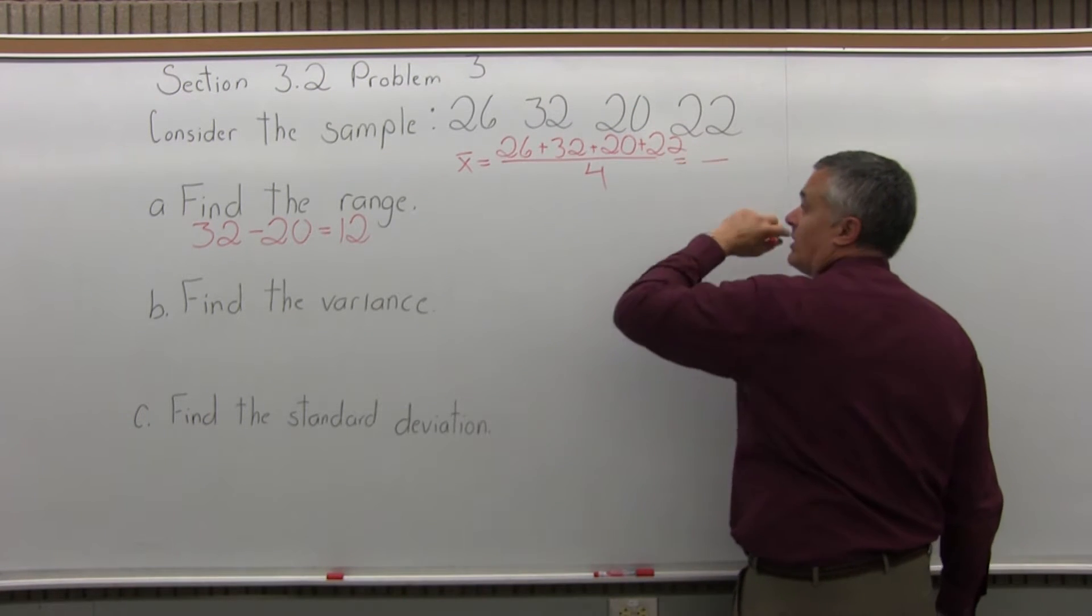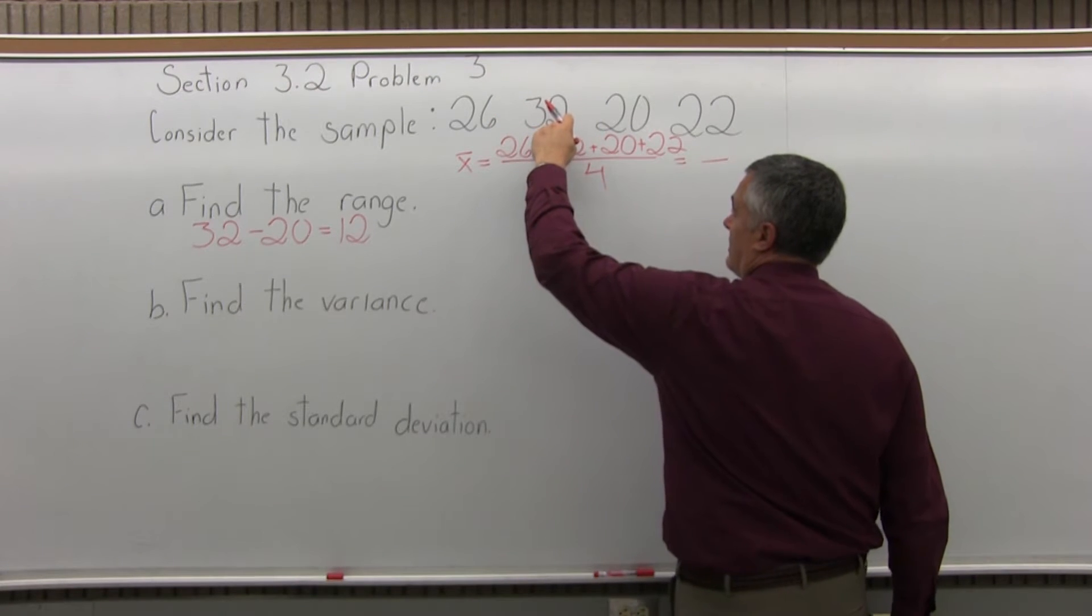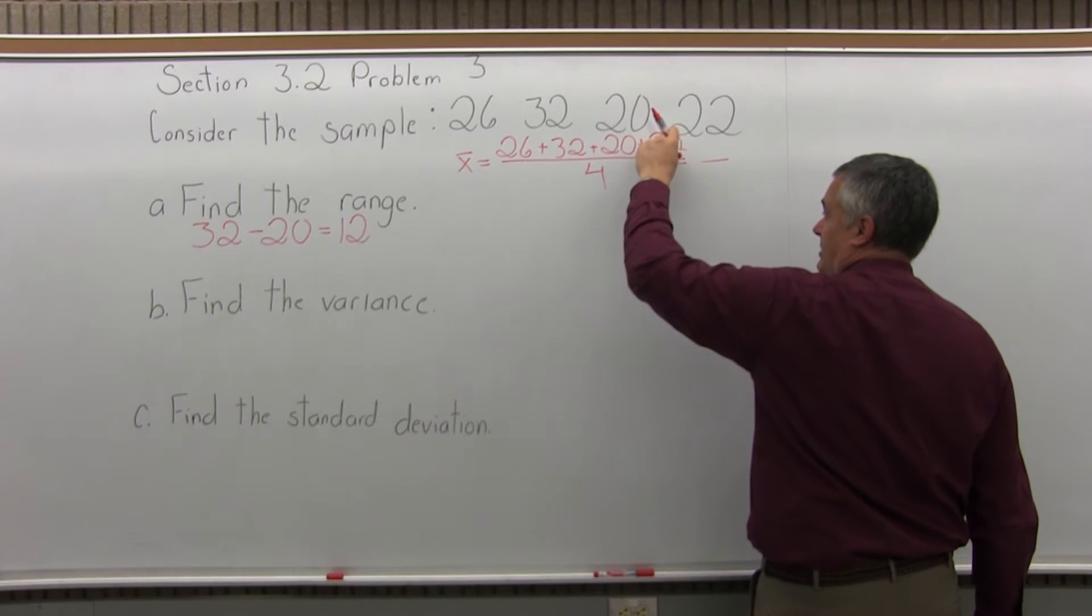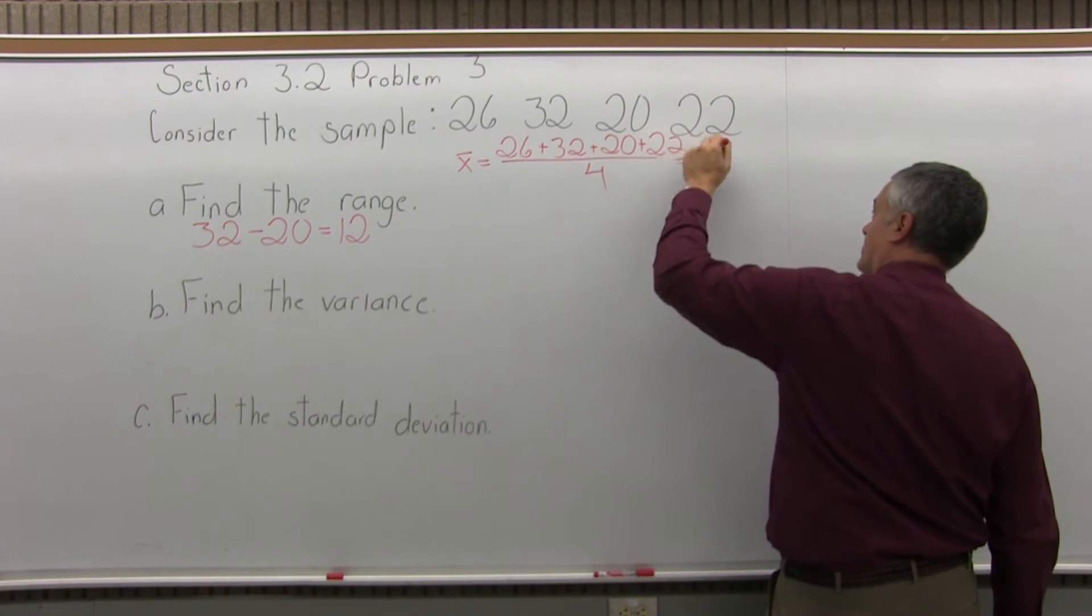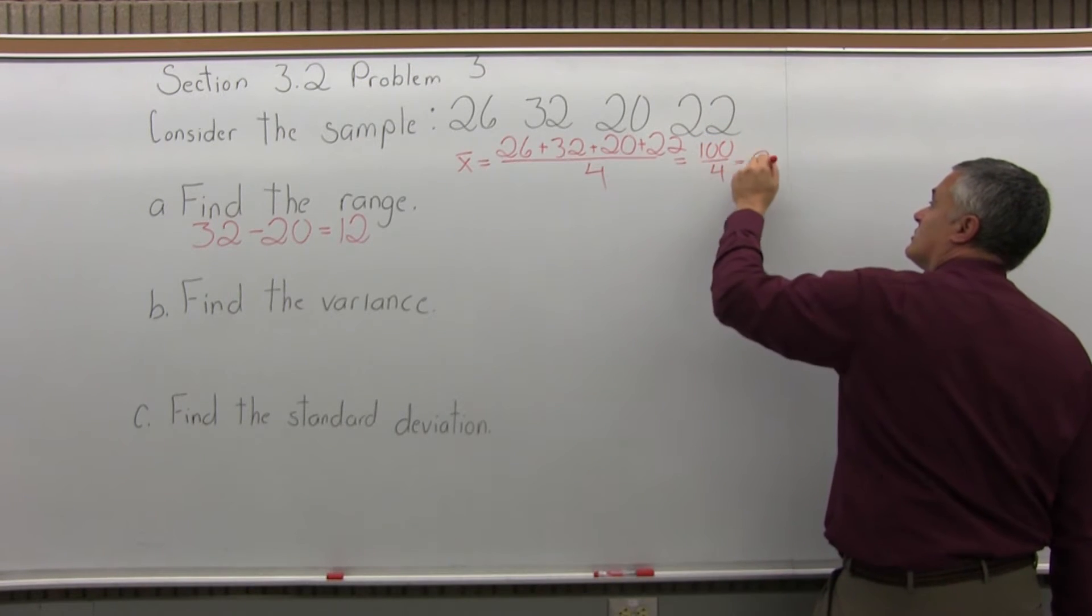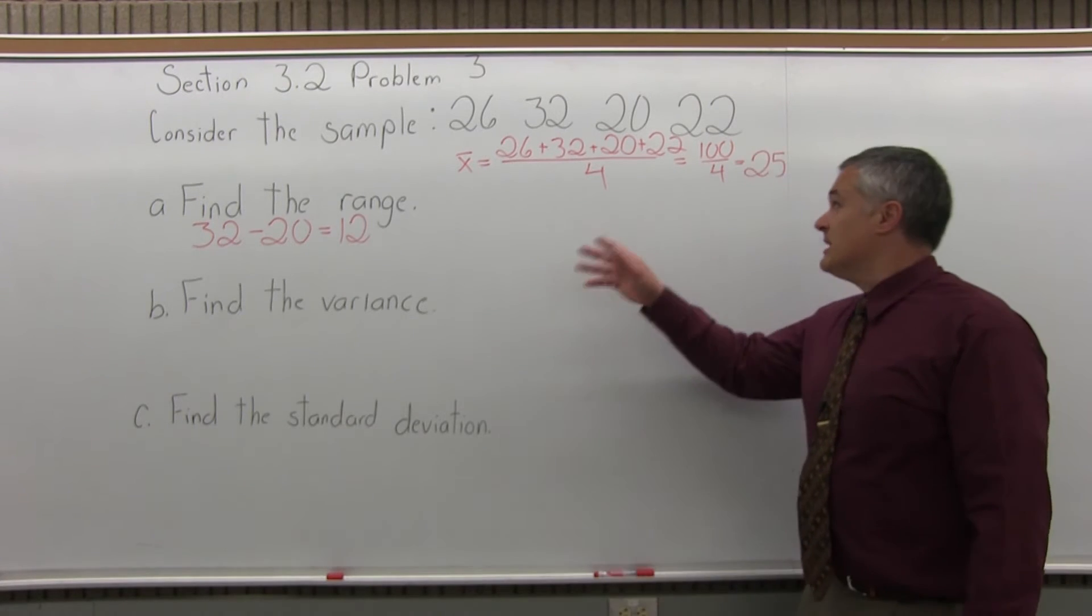So if I get a total on top, 26 and 32 is 58, 58 and 20 is 78, 78 plus 22 is 100 actually. So 100, I'm going to divide that by 4. The answer I get is 25. So that's the mean. Step one is find the mean, label it X bar, and that's what we've done.